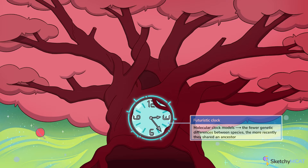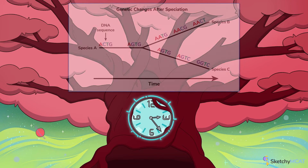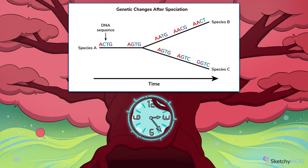Back to the real cutting-edge stuff. Scientists can now use data on how quickly mutations accumulate to work backwards from the DNA sequences of two modern populations. This allows them to estimate how long ago the two lineages were similar enough that they may have belonged to the same species.